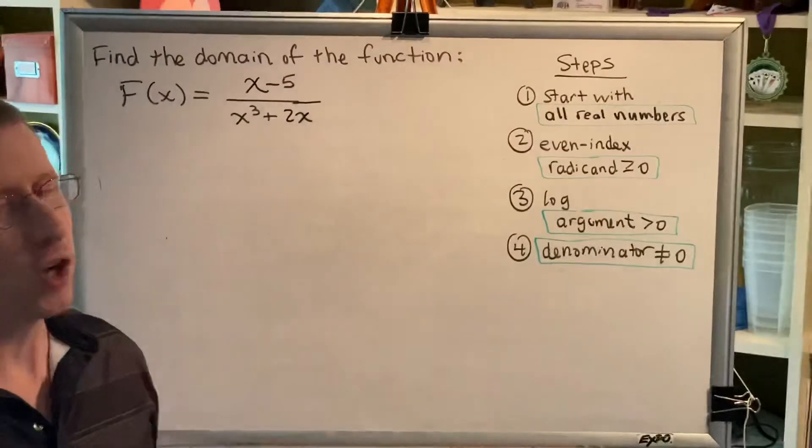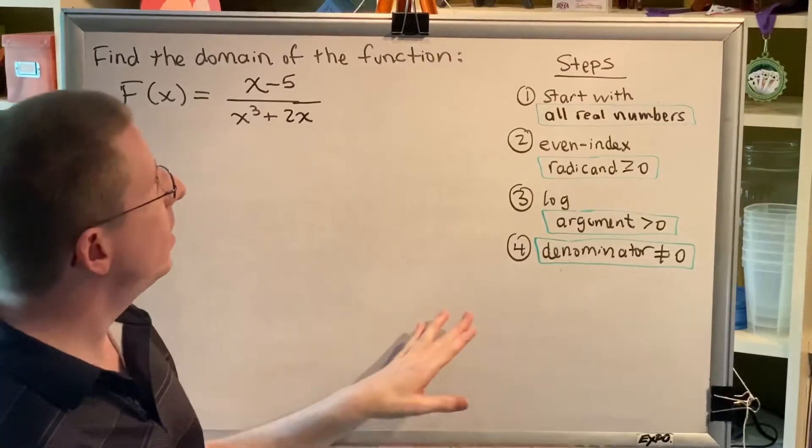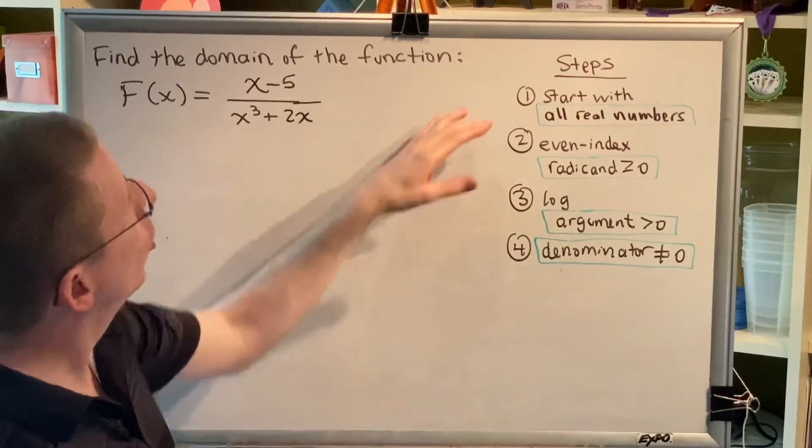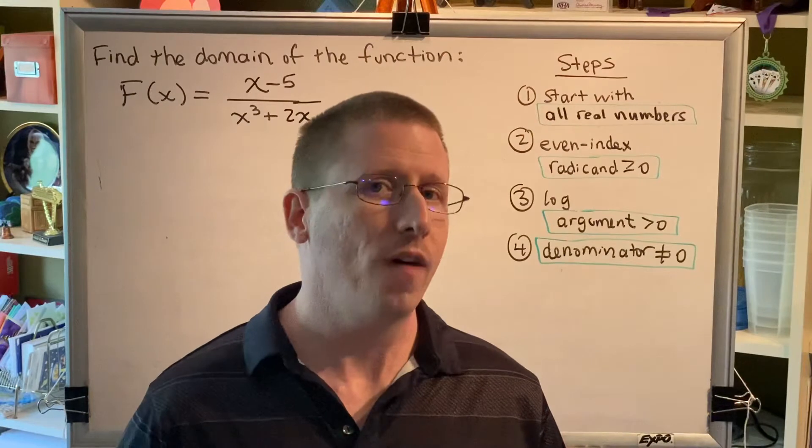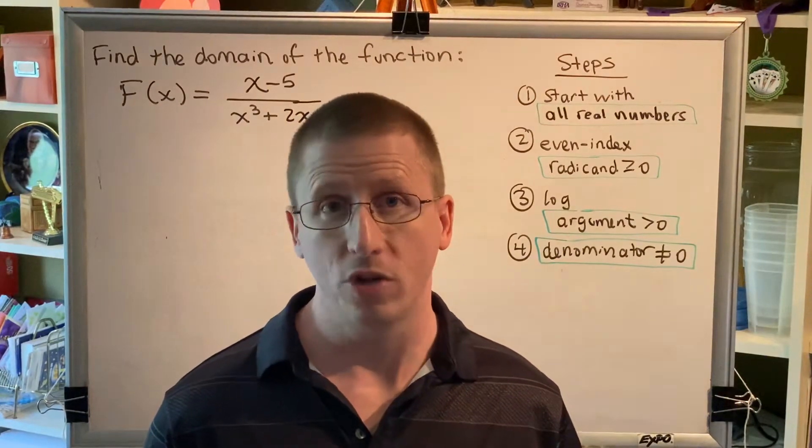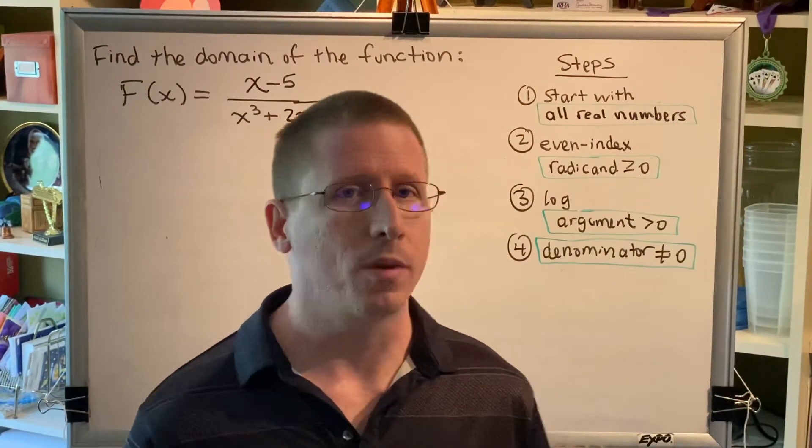I've written the steps over here and I'd like to talk about them briefly. The idea of this problem is very simple. We start with all the real numbers in the world as our domain, and then if we identify any numbers that we are not allowed to use in our domain, we remove them one step at a time.